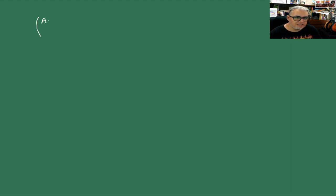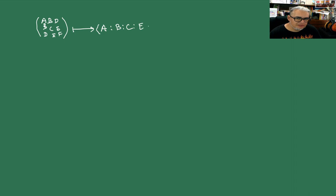Vamos a pensarlo de otra forma. Los elementos de la matriz de la cónica — A, B, C, D, E, F — los podemos mapear a clases de la forma (A, B, C, D, E, F). Estas clases en principio viven en el P⁵(ℝ), el proyectivizado de ℝ⁶. Cada cónica determina un punto proyectivo en P⁵(ℝ).